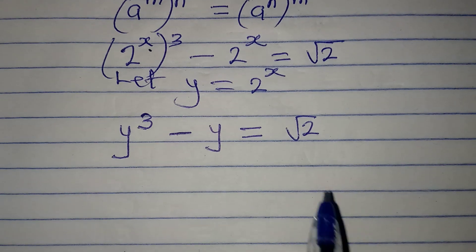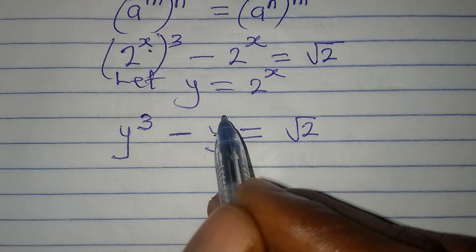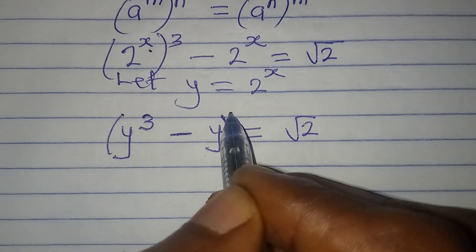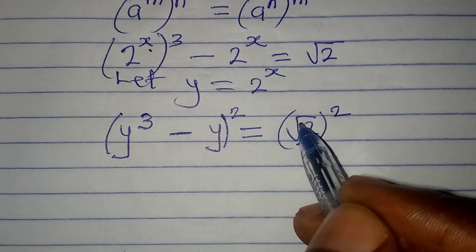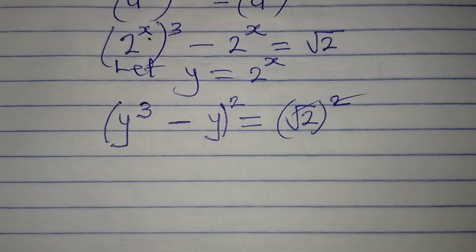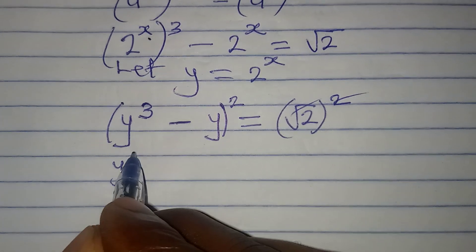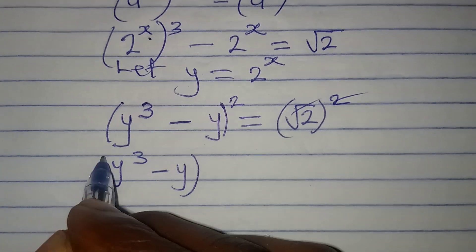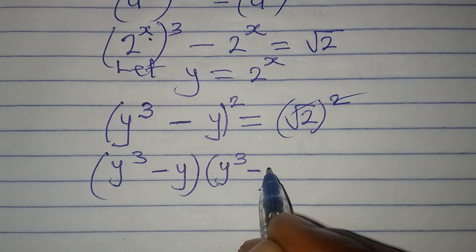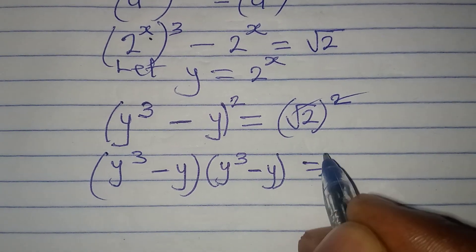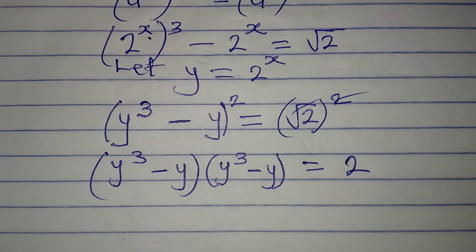The next thing on my mind is how to eliminate the square root, and I will do that by squaring both sides. The square and the square root cancel each other, so I have y to the power of 3 minus y, and I'll have it in two places: y to the power of 3 minus y, all equal to 2. Now let's open this bracket.